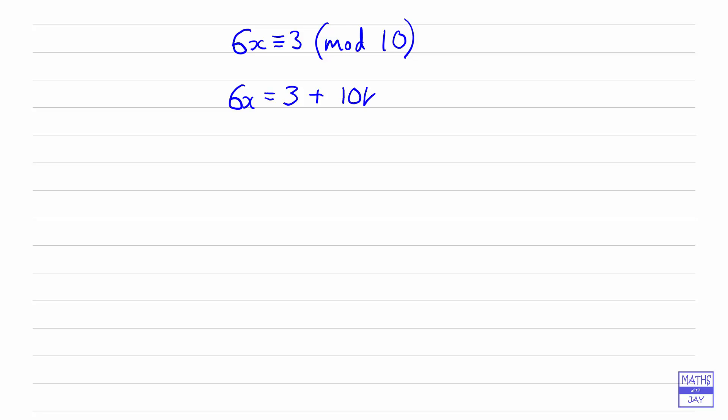So what we could do is just add on 10 times an integer k and then we've got 6x is the same as 3 plus 10k. And if we take the 10k away from both sides, then we've got 6x minus 10k is equal to 3.